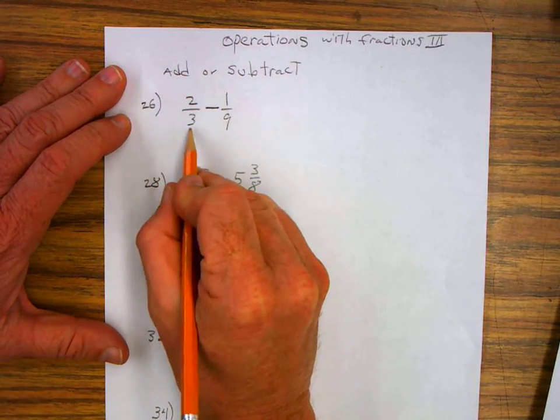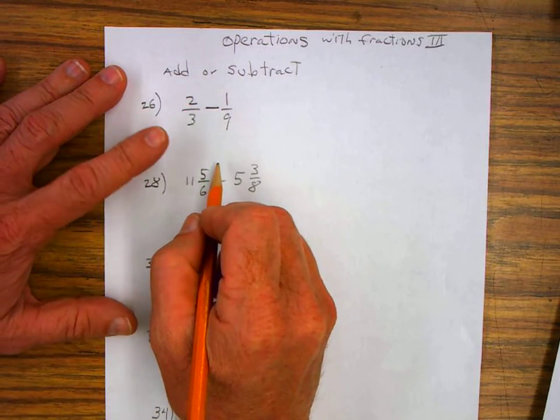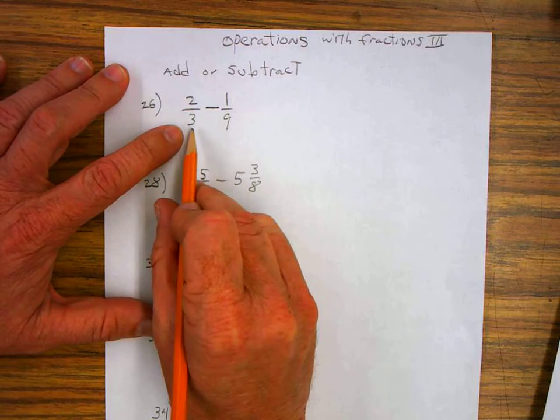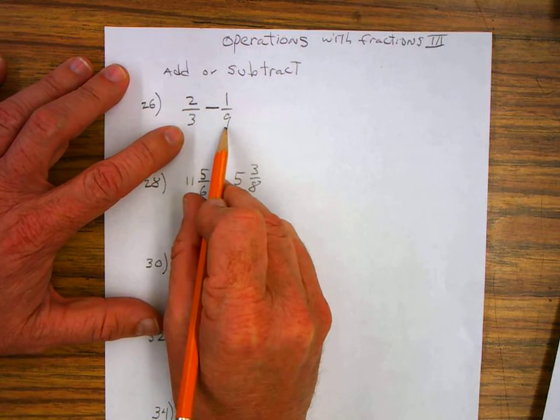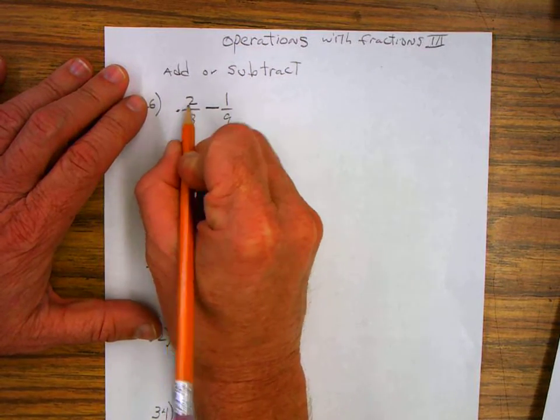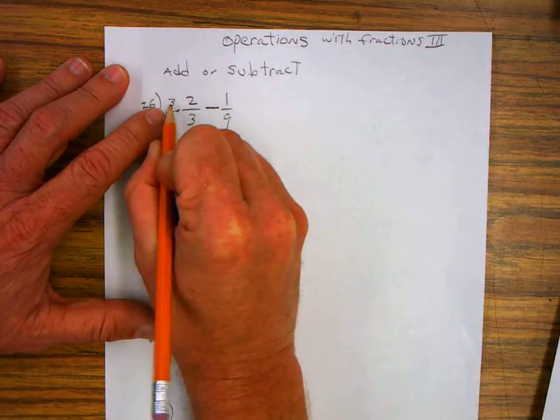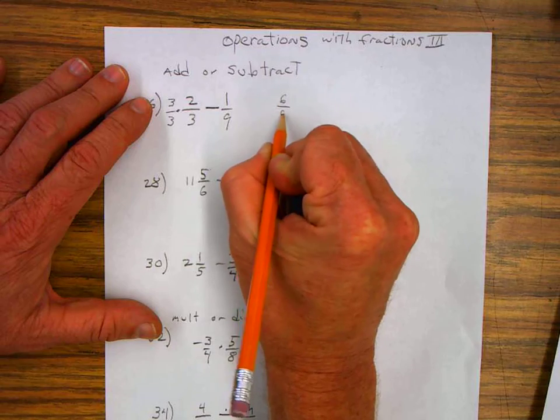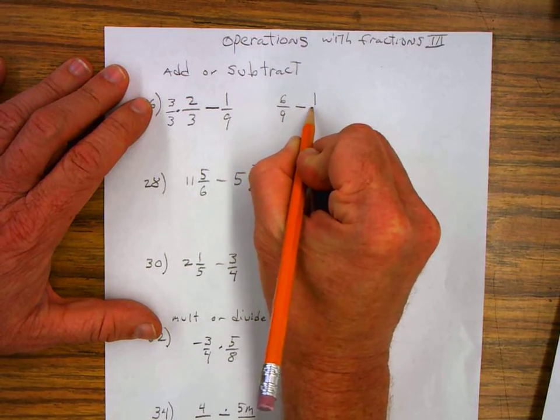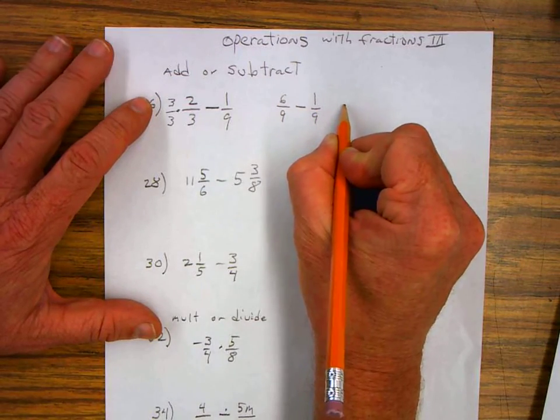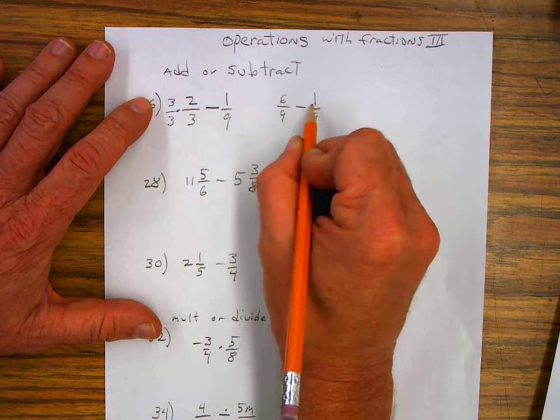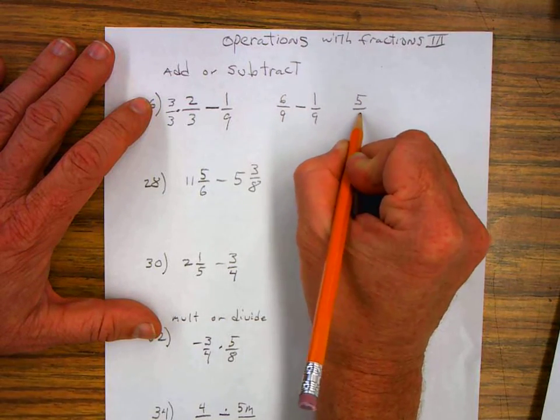So we have two-thirds minus one-ninth. We need a common denominator and the least common multiple of this one is nine. So I multiply this fraction by three over three and that gives me three times two is six over nine minus one over nine. So my answer is six minus one is five over nine.